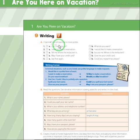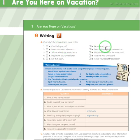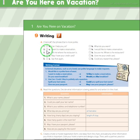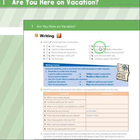Writing. Check the phrase that is more polite. Number 1: 'Can I help you, sir?' versus 'What do you want?' — 'Can I help you, sir?' is more polite. Number 2: 'I want to make a reservation' versus 'I would like to make a reservation' — B, 'I would like to make a reservation,' is more polite.